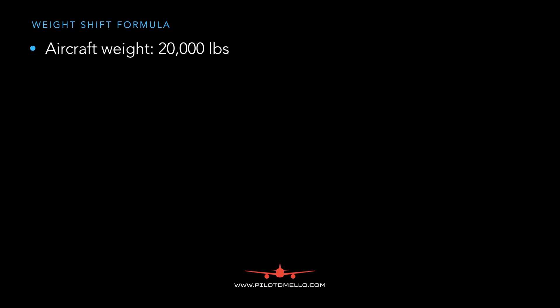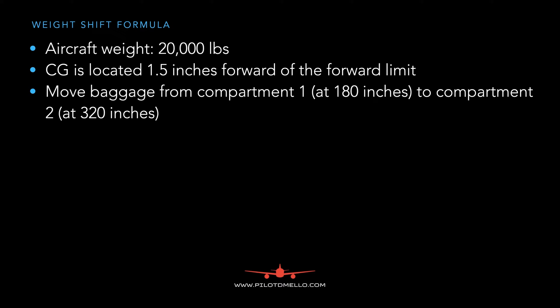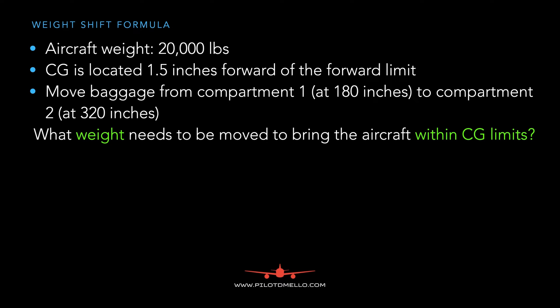In this example, we have an aircraft weight of 20,000 pounds. The center of gravity is located 1.5 inches forward of the forward limit. We want to move the baggage from compartment 1 located at 180 inches from the datum point all the way back to compartment 2 at 320 inches from the datum. What weight needs to be moved to bring the aircraft within the center of gravity limits?